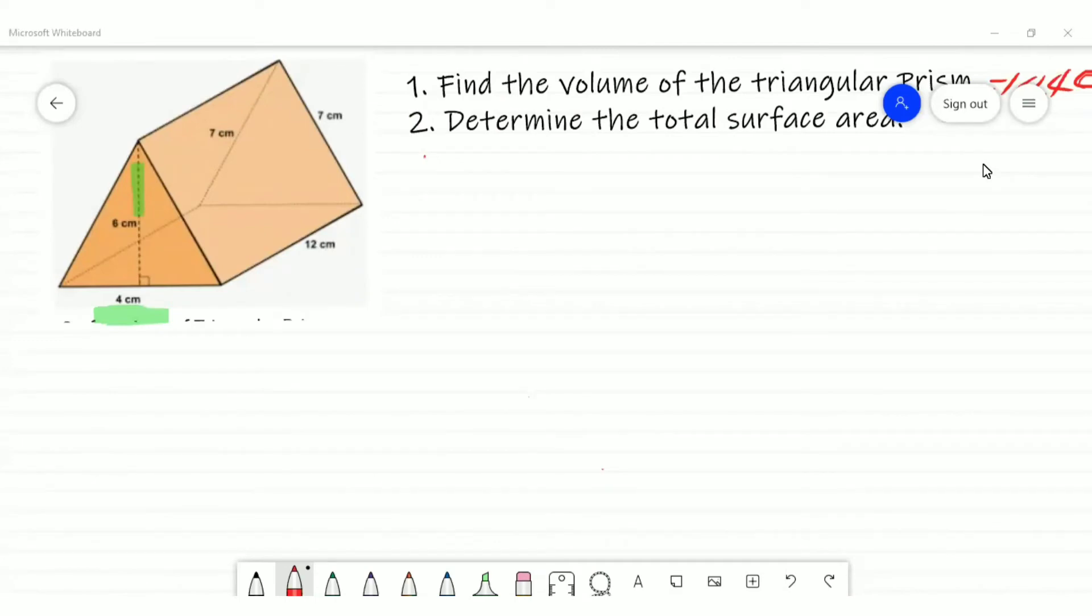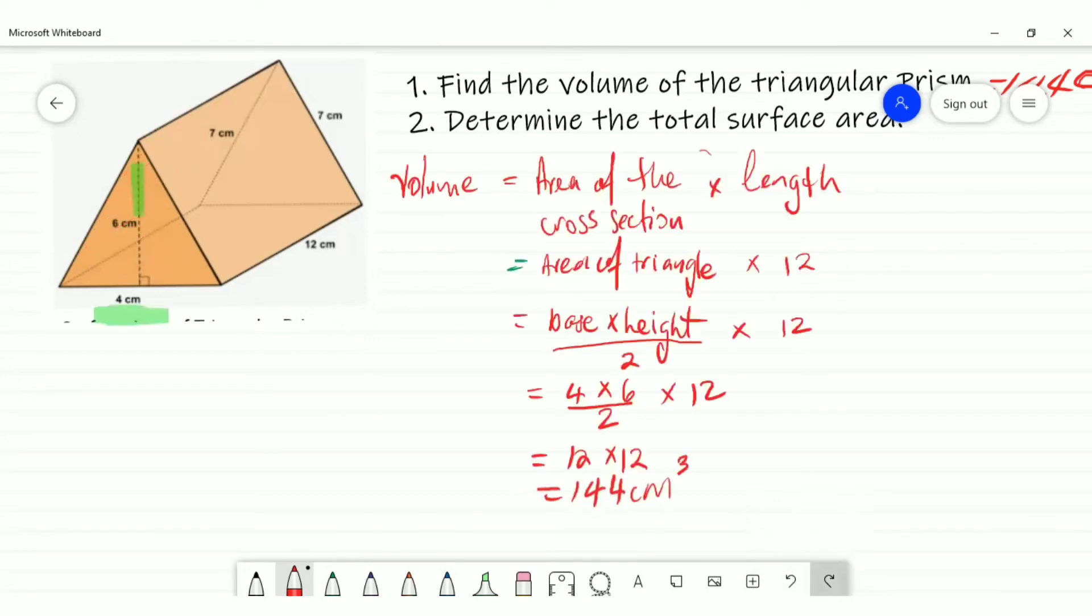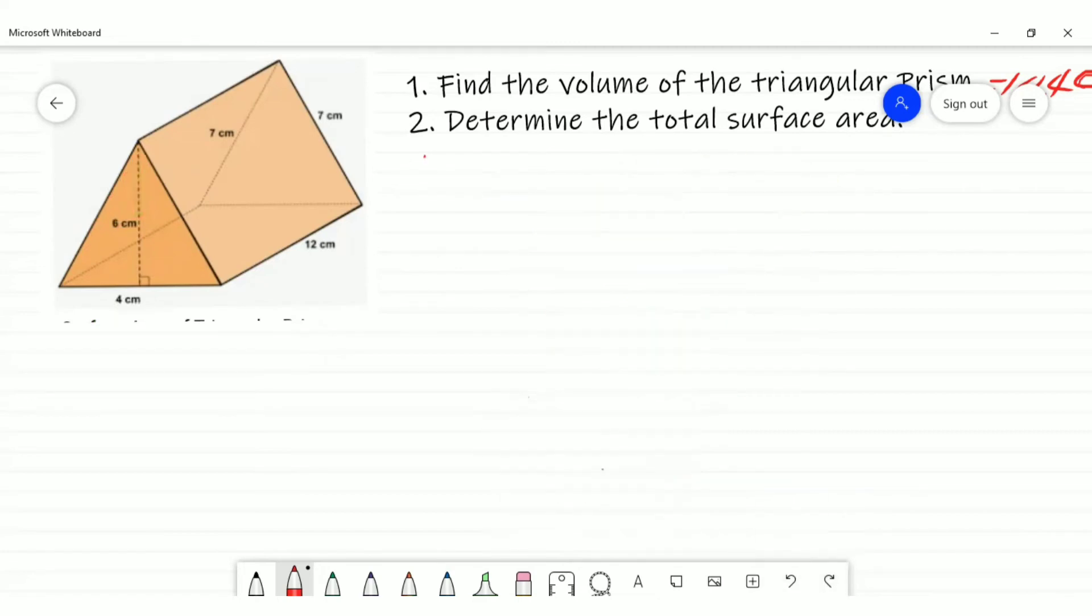Now for the surface area, you have to be paying attention because we're dealing with all the surfaces. Let's label them. We're looking at the triangles here and at the back. Also on the ground, I'm trying to identify the various plane shapes. If you notice, we'll be looking at a rectangle, and this rectangle is a 4 by 12 rectangle that's on the ground.